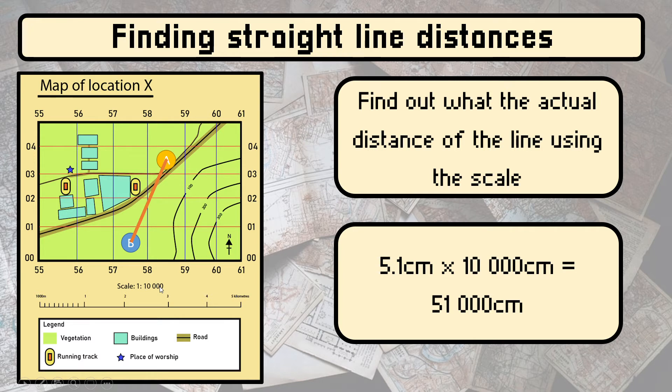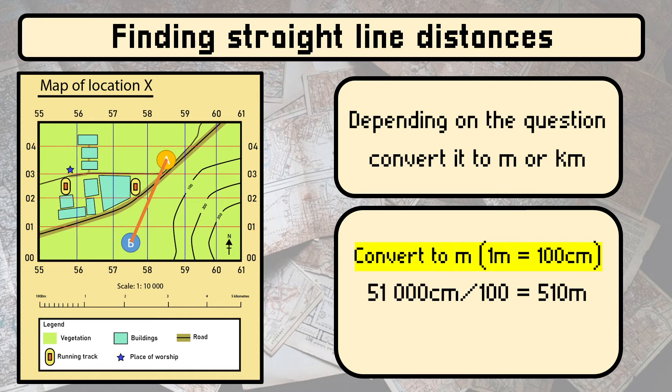For us to find the distance in reality based on the straight line that we have drawn, we take 5.1 cm, the length of this line here, and then we times the scale, 10,000 cm. What we get is 51,000 cm. Depending on the question, they will either ask you to leave your answer in meters or in kilometers.